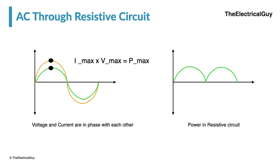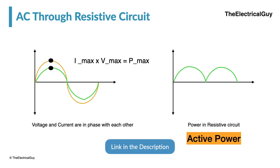This is the most important property of a resistive circuit — power never goes to the negative side; it always remains positive. Yes, it drops to zero, but then it returns to positive — never to the negative side. This power is also known as active power. If you want to understand more about active, reactive, and apparent power, I have a dedicated video on that — the link is in the description.